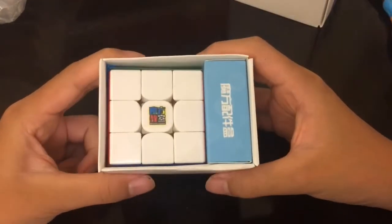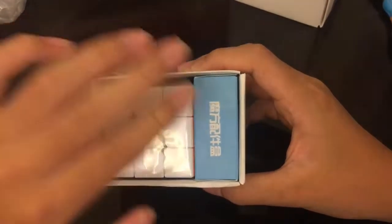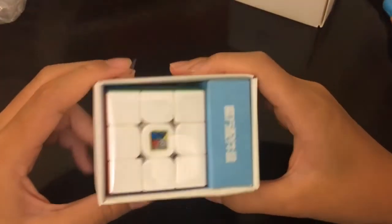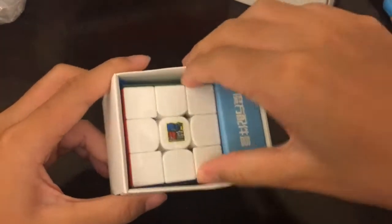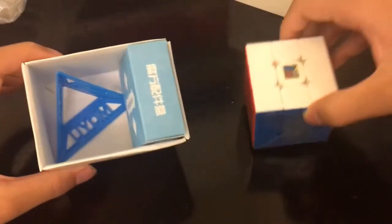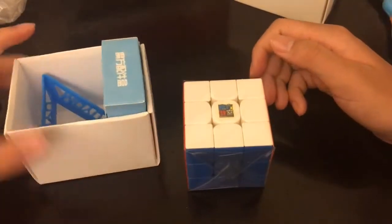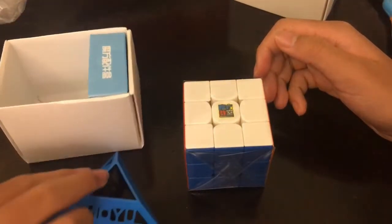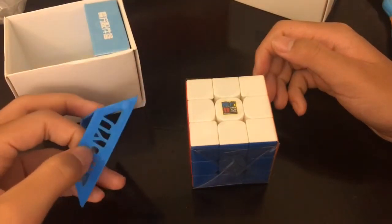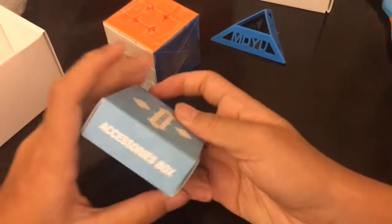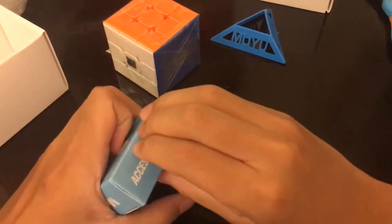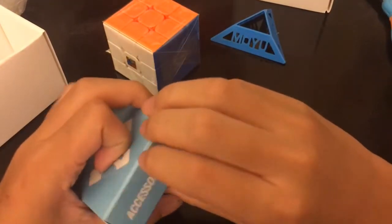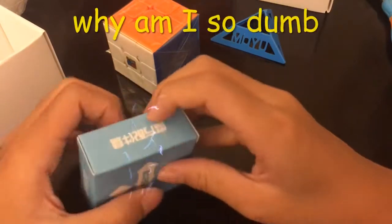This is just a typical Moyu box. There's the cube and the accessories box, very compact and nice. Packaging is definitely nicer than the original RS3M, and you get a cool stand as well. Here's the accessory box with normal accessories like the screwdriver and extra springs, extra magnets.